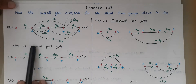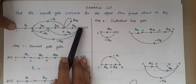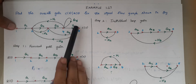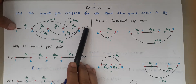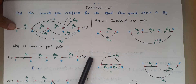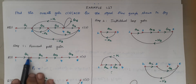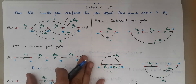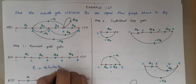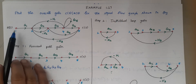The first step is calculating the forward path gain. From the diagram, the forward path consists of arrows that move forward. From node 1 to node 5, this is your first forward path. The forward path gain is the product of the values on each branch, which gives us G1, G2, G3, and G4.